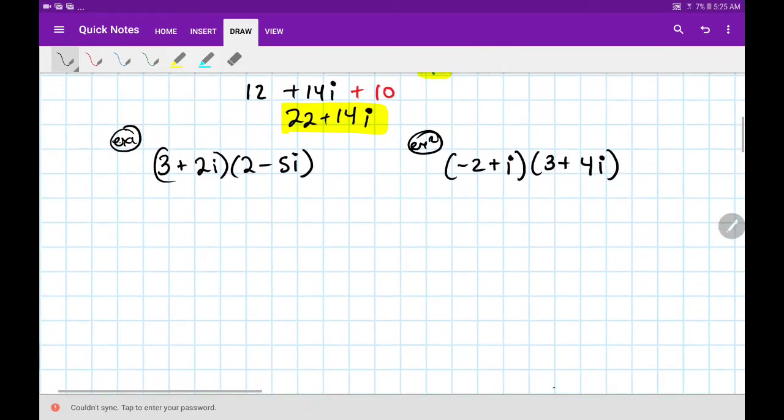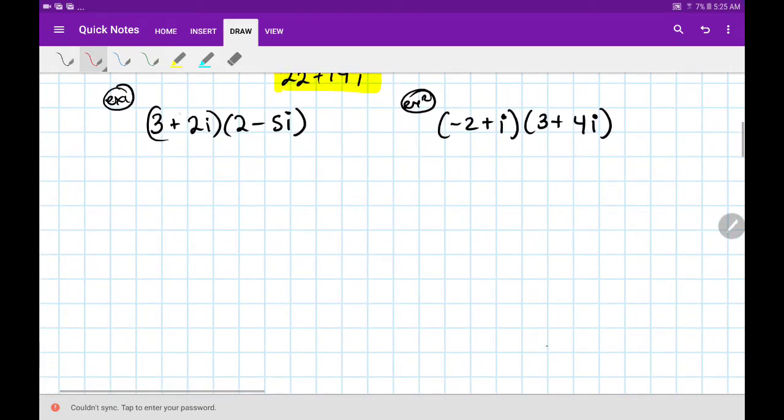Alright, so I assume you have time to work on this. Let's check it out. See if you got six minus fifteen I, plus four I, minus ten I squared. Two things you can do. Combine like terms, and flip that sign. So this would have become negative ten times negative one, which is really plus ten.